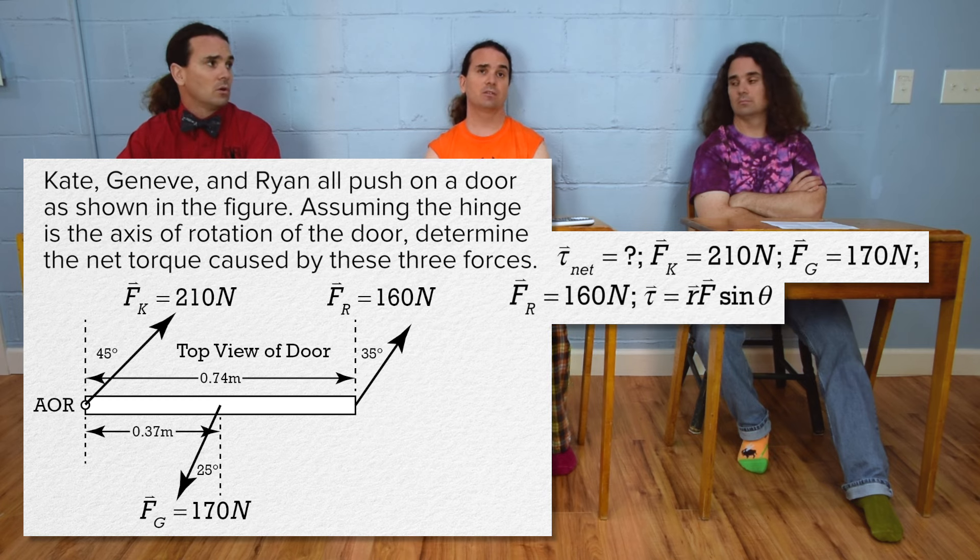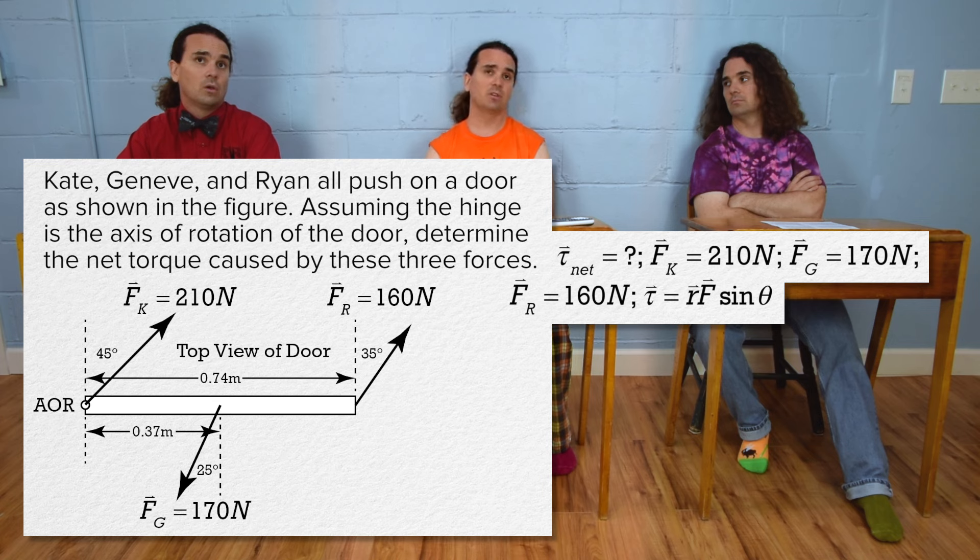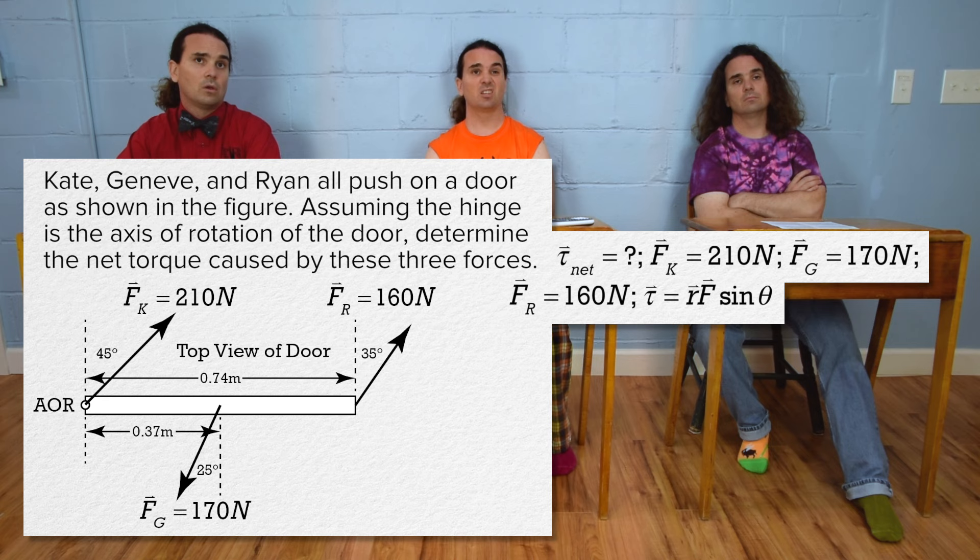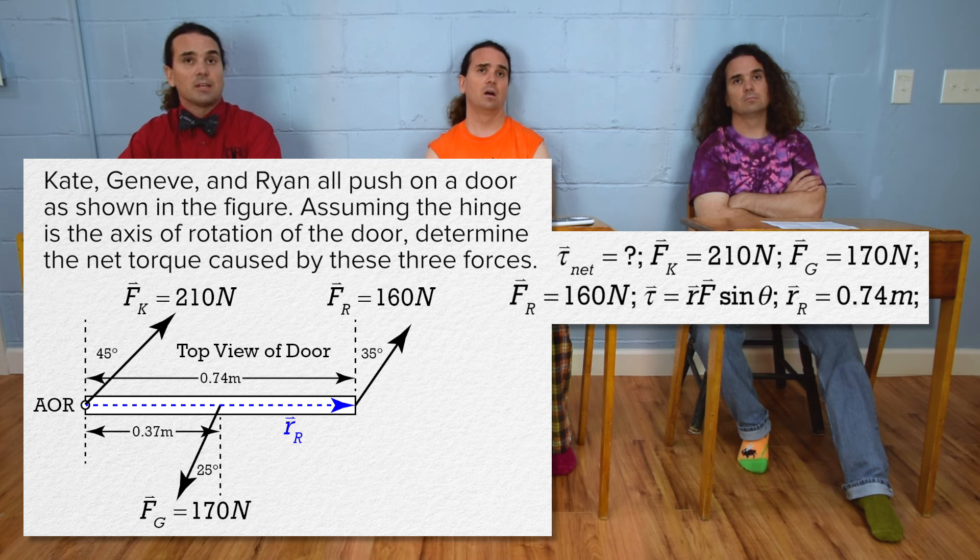Torque equals the r vector times force times the sine of theta, the angle between the direction of the r vector and the direction of the force vector. So, we can determine the r vectors and the angles. Right, so r for Ryan is 0.74 meters, r for Geneve is 0.37 meters.